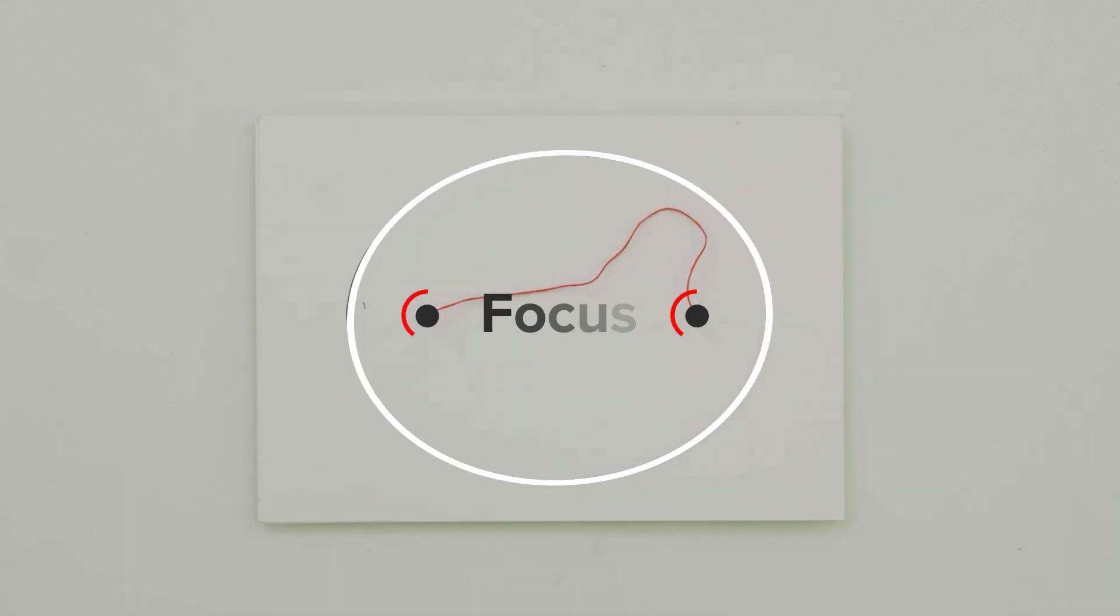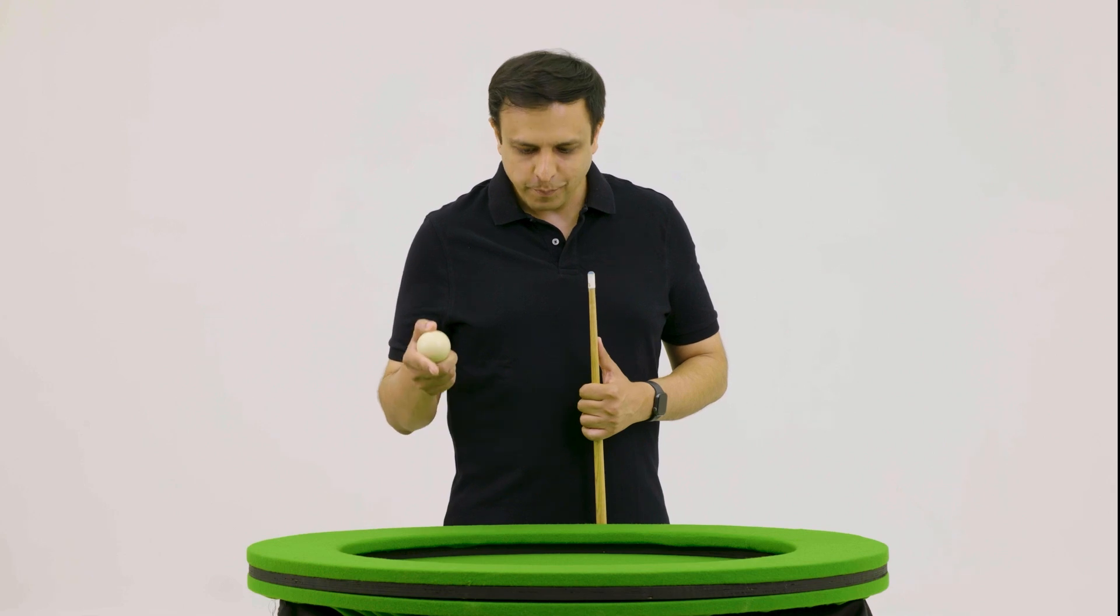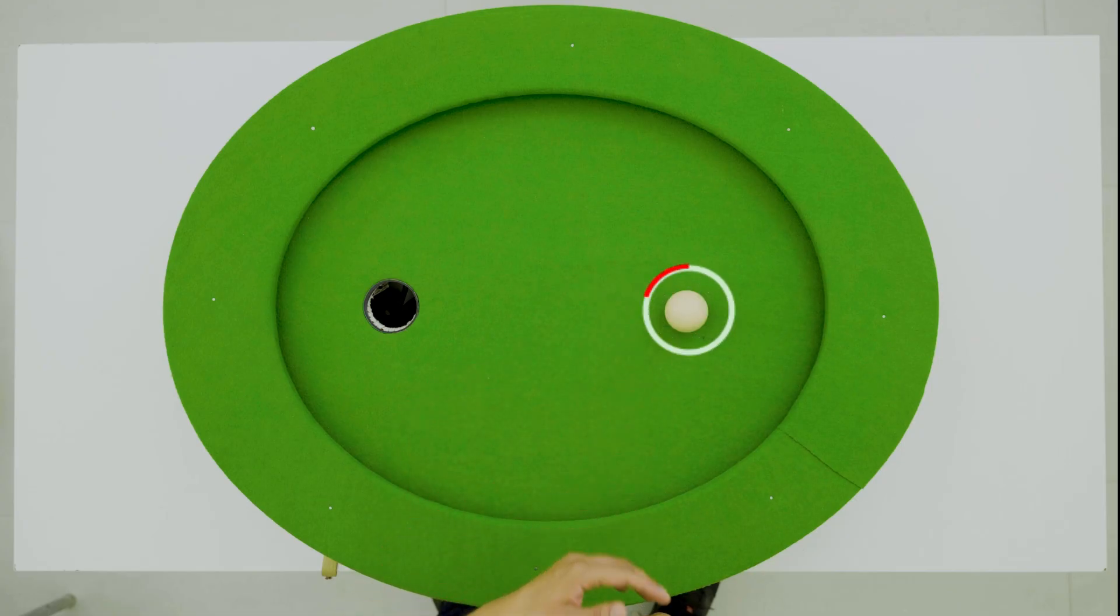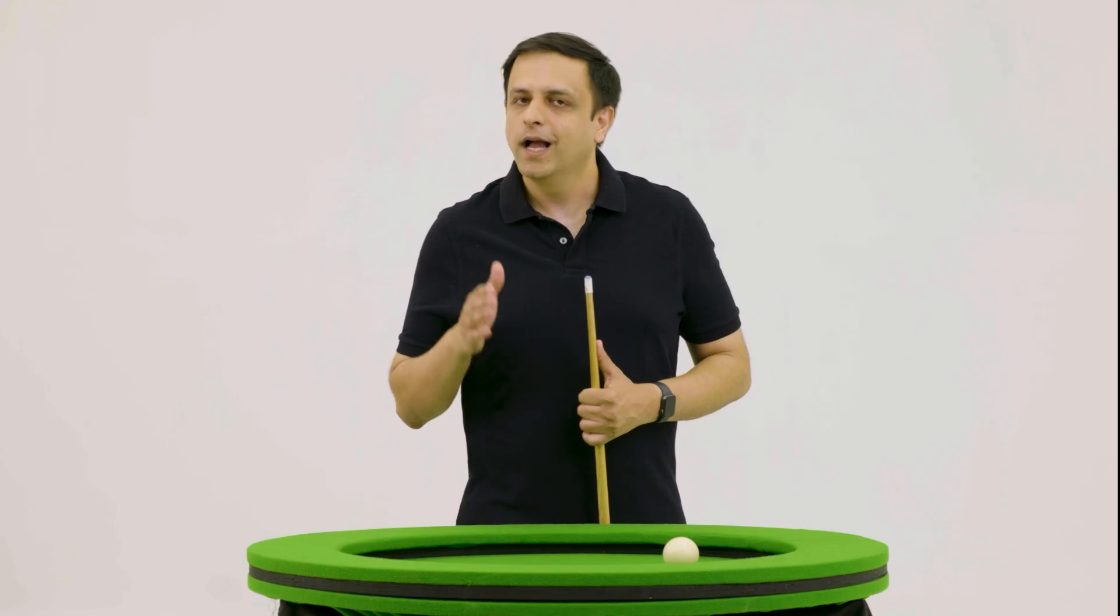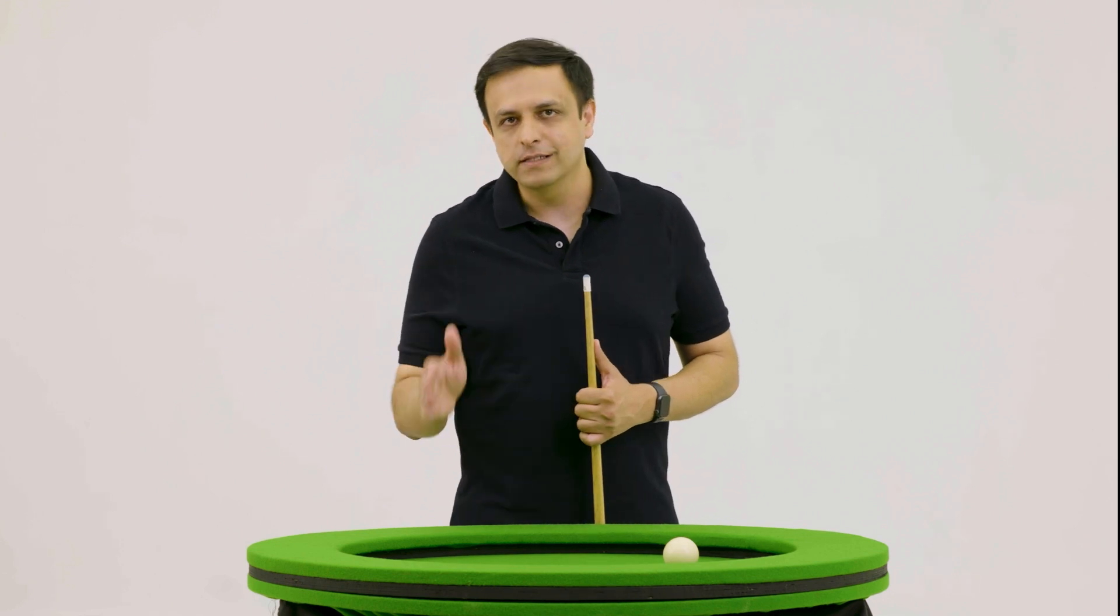Each of these special points is called a focus. On the elliptical pool table, the ball was placed at one focus and the hole at the other. And that's what makes the ball always land in the hole.